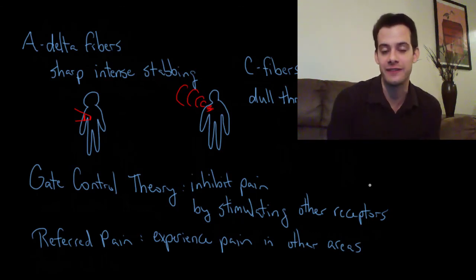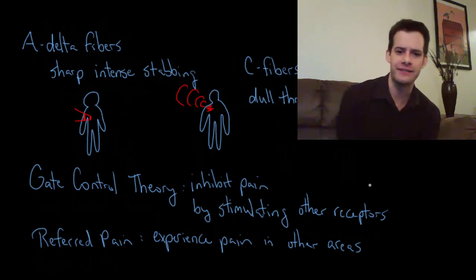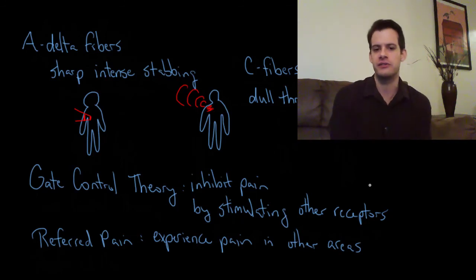Perhaps the most famous example of this is one of the symptoms of having a heart attack. You've probably heard that a symptom of having a heart attack is shooting pains in the left arm. There's no damage actually occurring to the left arm. What's happening is the pain receptors inside the chest are sending their message, but it feels like it's coming from the left arm, because there's some overlap where the neurons meet the spinal cord. That's another example of referred pain.